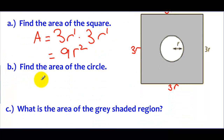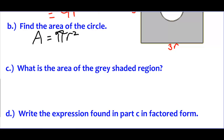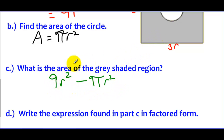For the circle, the area formula is πr². In this case the radius is just r, so we use this formula directly to represent the area of the circle — that's the hole we've cut. Now we have 9r² for the area of the square and πr² for the area of the circle. To find the area of the shaded region, we take 9r² and subtract away πr². So the area of the shaded region is 9r² minus πr², and this expression represents the area of what's left over.